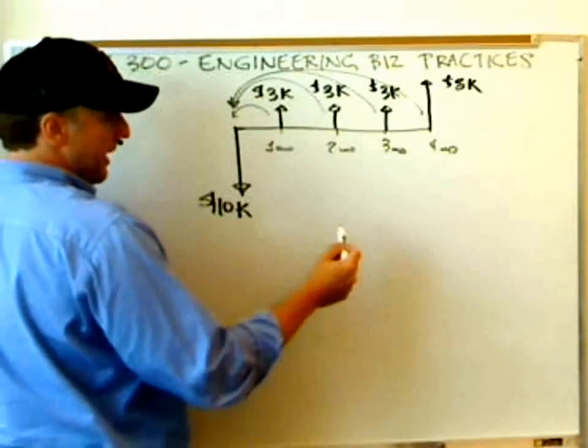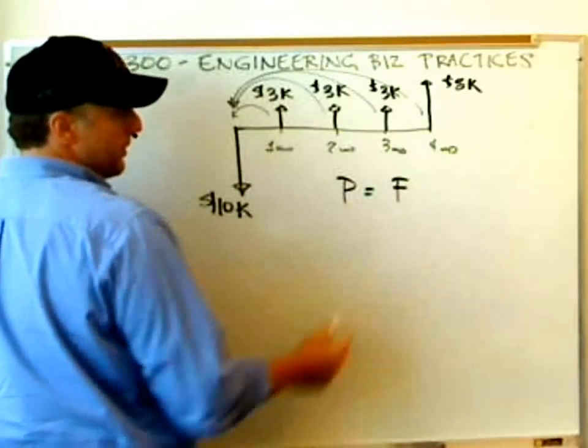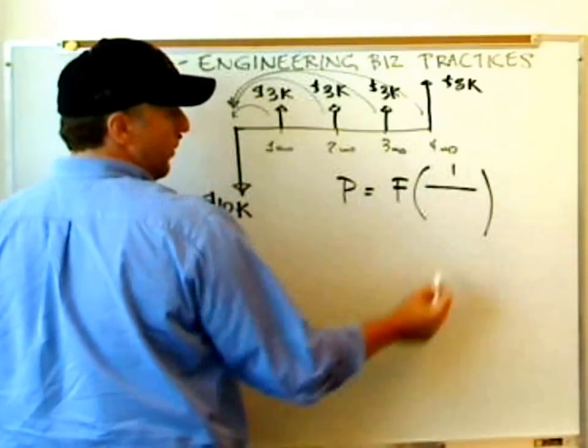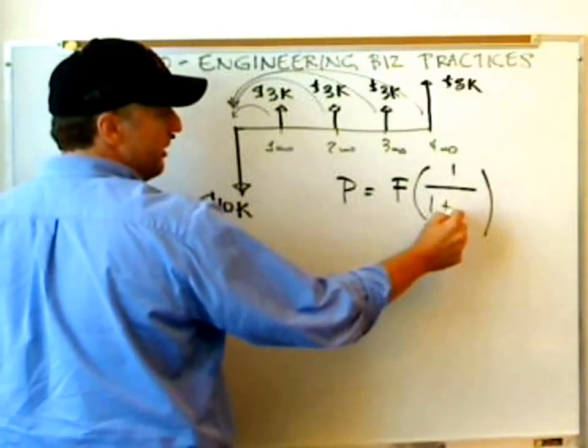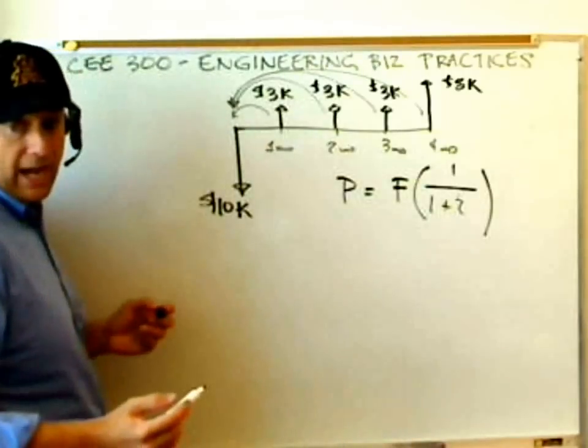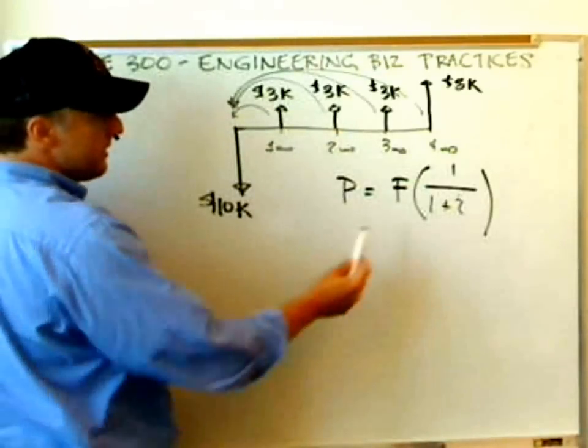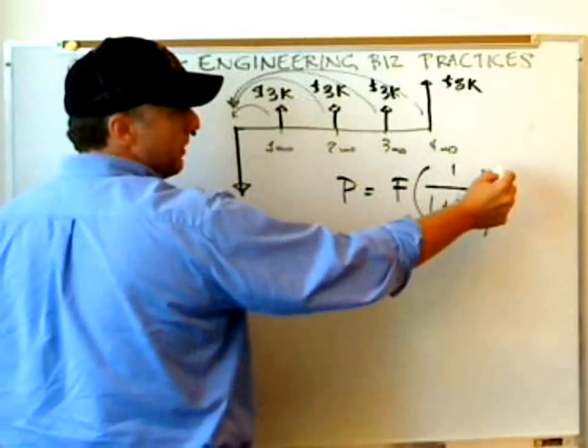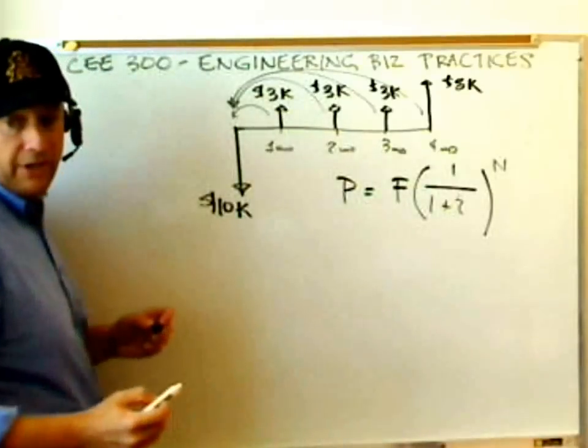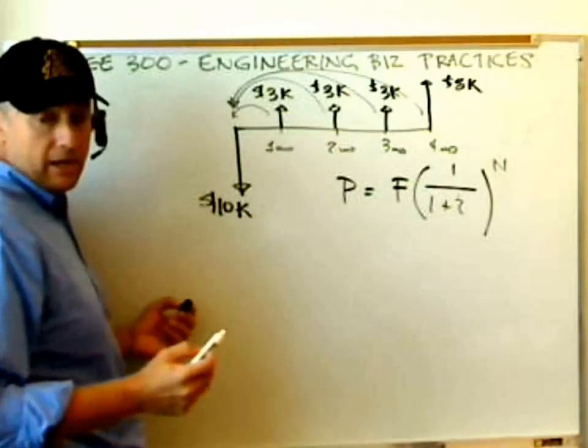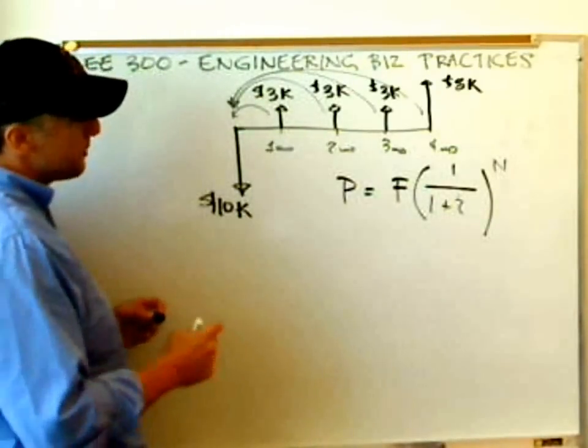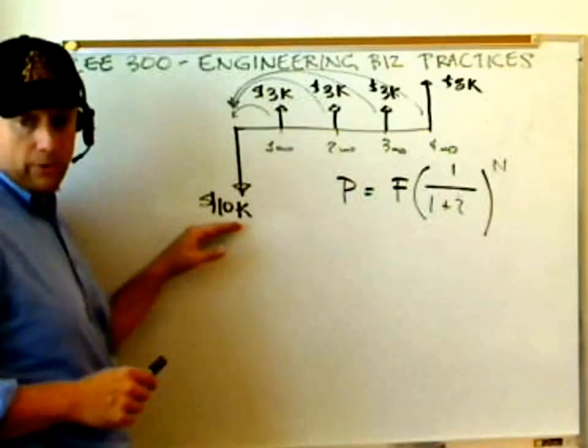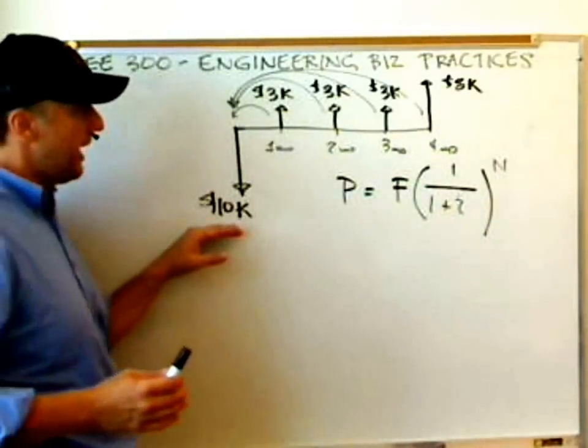One way to do this that we should understand right away is to reduce each one of these to present value using what we've studied previously called the discount rate. There will be a formula for that. The present value of these future values is going to be 1 over 1 plus the discount rate. I'm going to use I as the discount rate. In this case, we have to express I on a monthly basis multiplied by N. In our previous video, we said, where do discount rates come from? And we explored lots of different options.